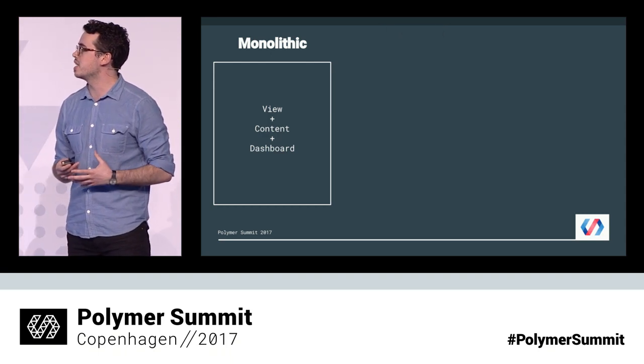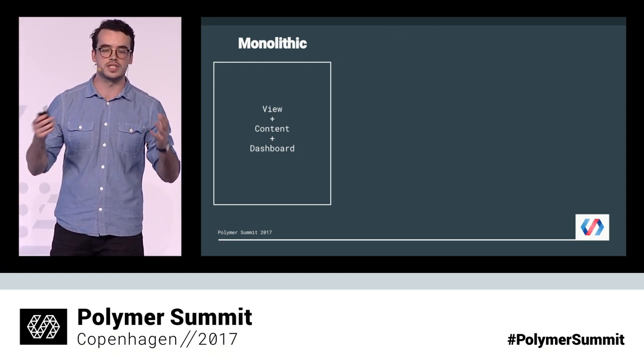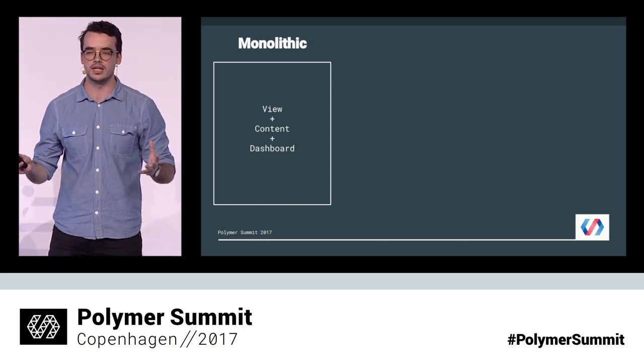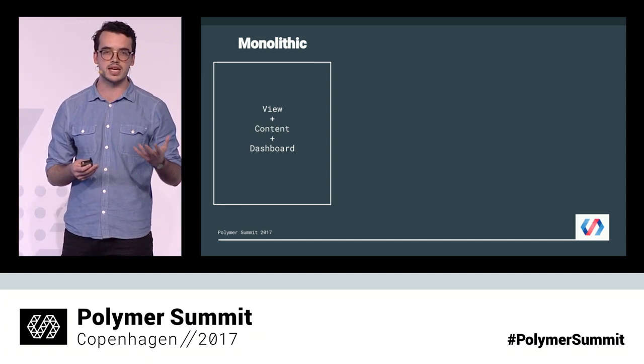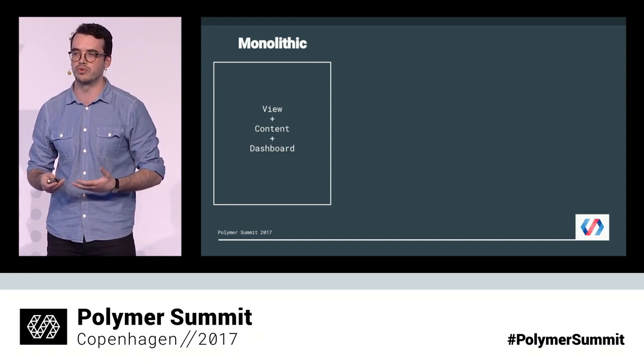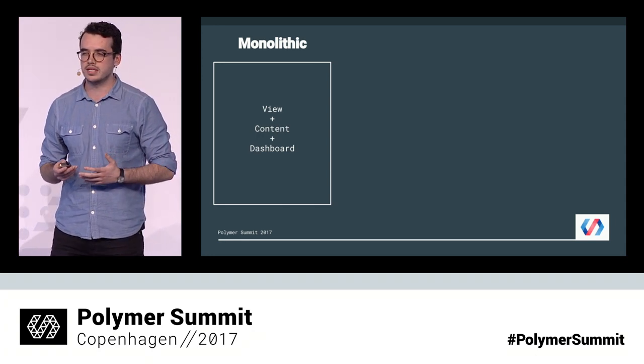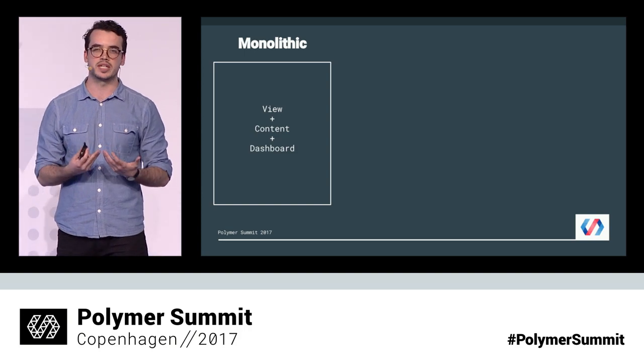Let's first look at a monolithic CMS. A monolithic CMS is essentially your traditional CMS such as WordPress or Drupal. It gives you all of the functionality that you need in one single app. On the one hand, this is great — it's really easy to set up and get going with. But like any monolithic system, it means it's quite rigid. From a developer's perspective, it can be quite difficult to change the way you're displaying that content. For example, if you want to use a different framework or a different templating system, it's going to be really hard to work with a monolithic system.